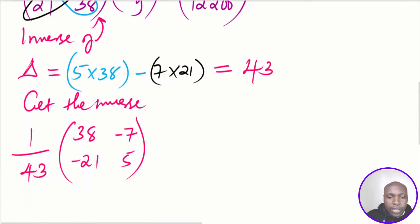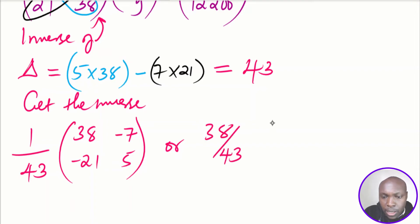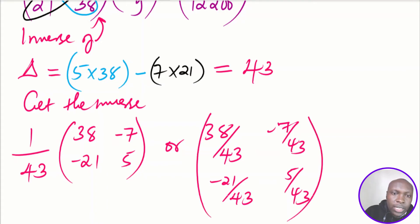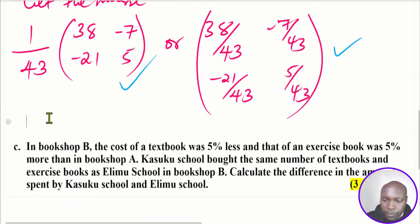The inverse can be written as (1/43)[38, -7; -21, 5], or equivalently with each element divided by 43: [38/43, -7/43; -21/43, 5/43]. You can leave it in either form.